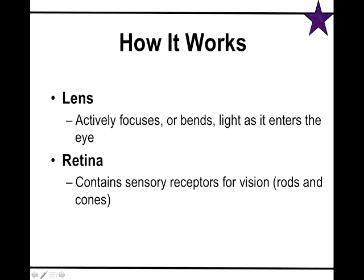Directly behind the pupil is a football-shaped thing called the lens. The lens is like a magnifying glass — it's the focus area that bends light to focus on the retina. If you are nearsighted or farsighted, the lens is the problem: it focuses but in the wrong place. Contacts help readjust the focus. All the real work goes on in the retina, the back of the eyeball, where everything is transformed from a light wave to something the brain understands — neural messages.